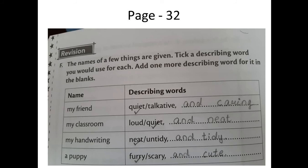Next is 'my classroom.' Is your classroom loud or quiet? Mine is quiet, so I have chosen quiet. If you think your classroom is loud, you can choose loud. From both, choose any one, and one you have to write yourself. I have written neat — I could also write bright, because it's full of bright students. Next, 'my handwriting' — my handwriting is neat. If yours is not, you can choose untidy. From two options, choose one and write one by your own. I have written tidy. Next, 'a puppy' — you can choose furry or scary. I have chosen furry, and one more you have to write. I have written cute. Students, you can write your own adjective — your own describing words for these names.